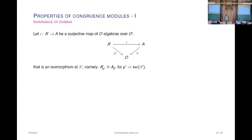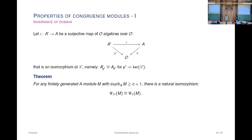The definition is fairly elementary, but the trouble is to prove any properties of it. Let me talk about a few key properties. The first is something called invariance of domain. Suppose you have a map of rings—we have A and M—and a map of rings A-prime to O in this category, which means you have a commutative diagram, and they only differ up to torsion in the sense that when you localize at the relevant prime ideal they become isomorphic—so they have the same codimension. In this case, it doesn't matter if you compute the congruence module of M as an A-module or as an A-prime module—they are isomorphic, not just the same length.